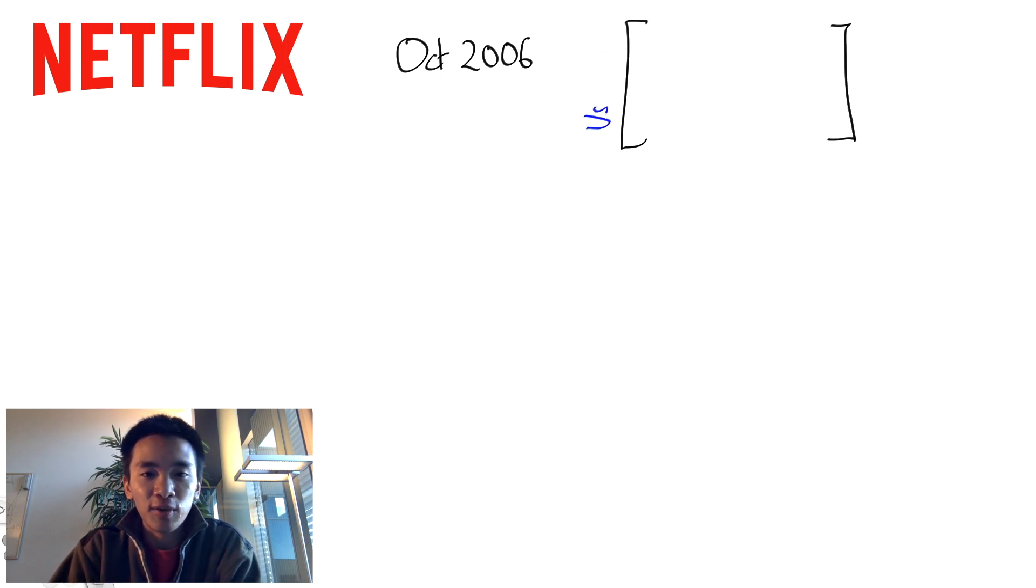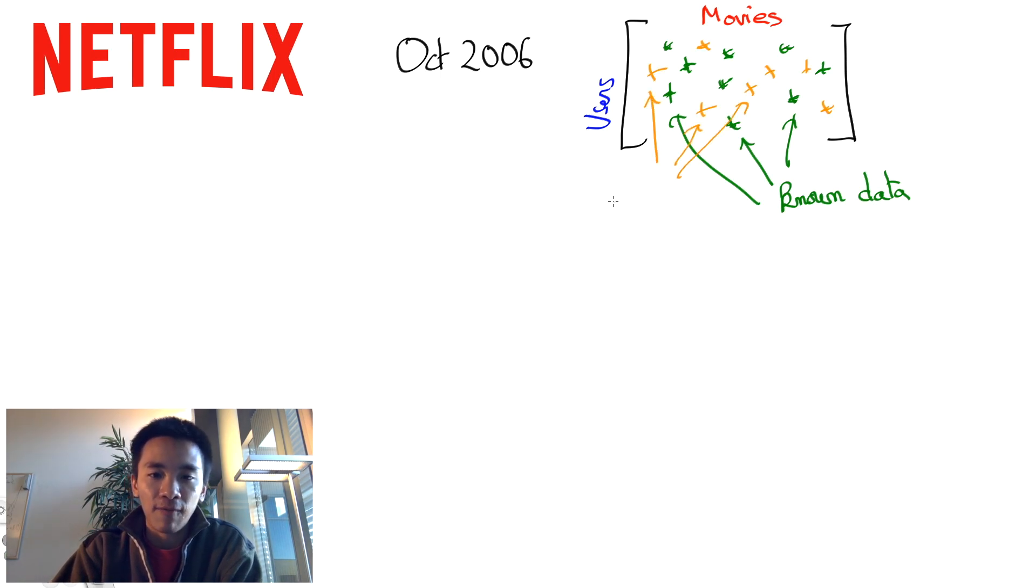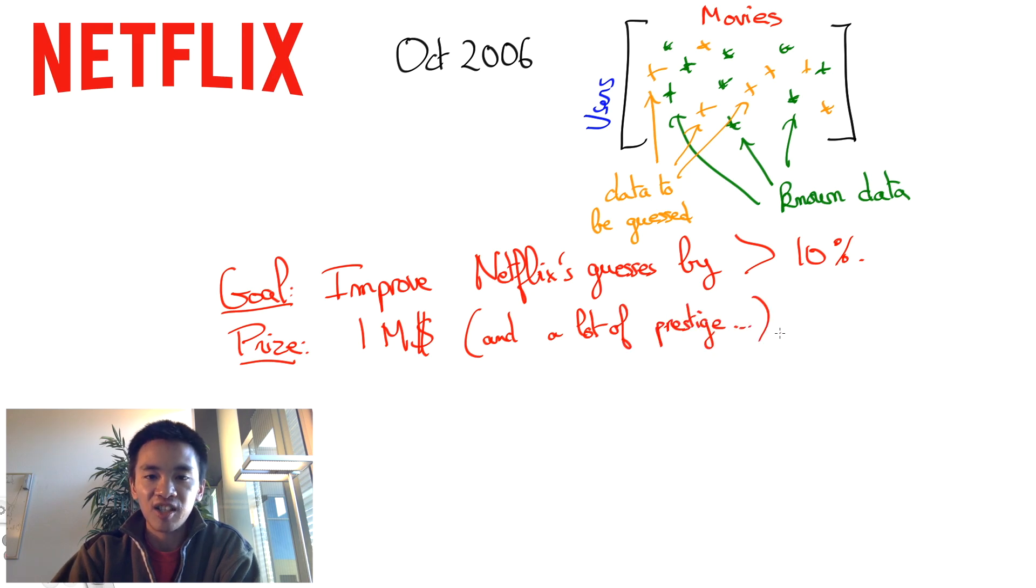On October 2, 2006, the giant video-on-demand Netflix company launched the infamous Netflix Prize. The problem is basically to forecast users' future ratings of movies. But the news made a huge buzz because Netflix also announced that the first team to improve Netflix's algorithm by 10% would be awarded 1 million dollars. To receive this award, a team would have to publish a description of its algorithms.